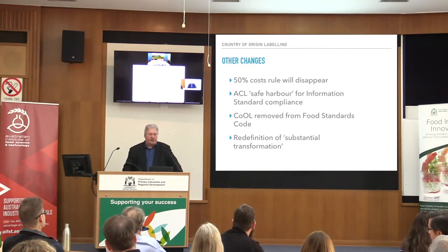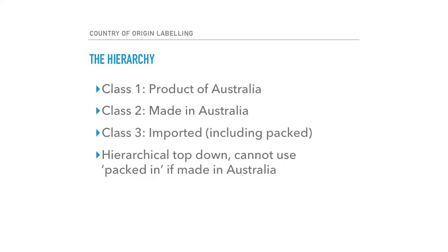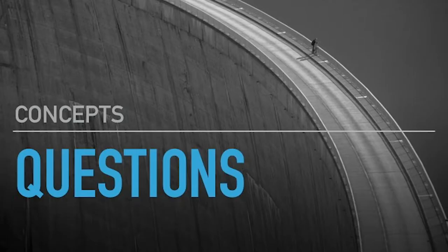Origin labelling is also disappearing out of the Food Standards Code — you won't find it there from 1 July. The definition of substantial transformation has been changed. It's a top-down hierarchy now, which is a change. You used to be able to just say 'bottled in Australia from imported ingredients.' Not anymore. There is a hierarchy and you must follow the hierarchy of claims.